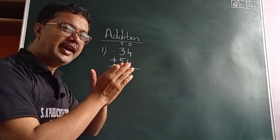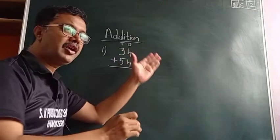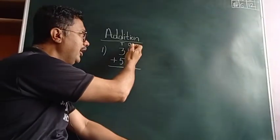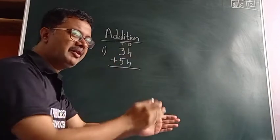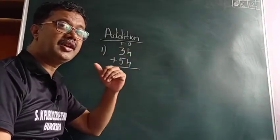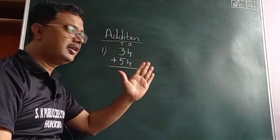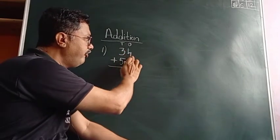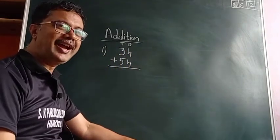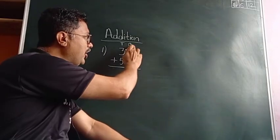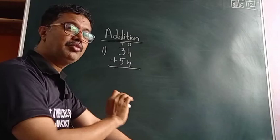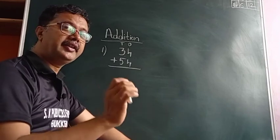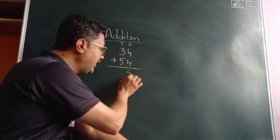We will add from the right side, from ones place to tens place, according to the place value chart. We add the upside and downside numbers. Four plus four — both are in the ones place — four plus four is equal to eight. We write eight here.